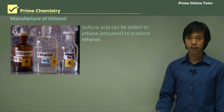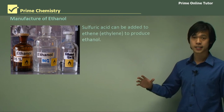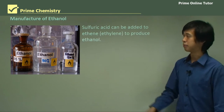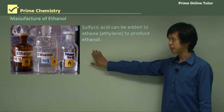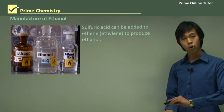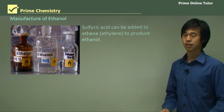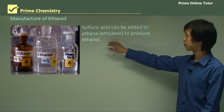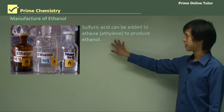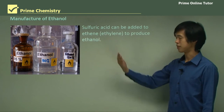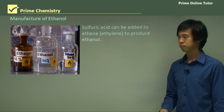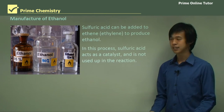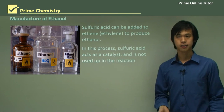Another very common use of sulfuric acid is the manufacture of ethanol — or ethylene, depending on the conditions of the reaction. Sulfuric acid can be added to ethene or ethylene to produce ethanol. In this process, the sulfuric acid is simply a catalyst and is not used up in the reaction.